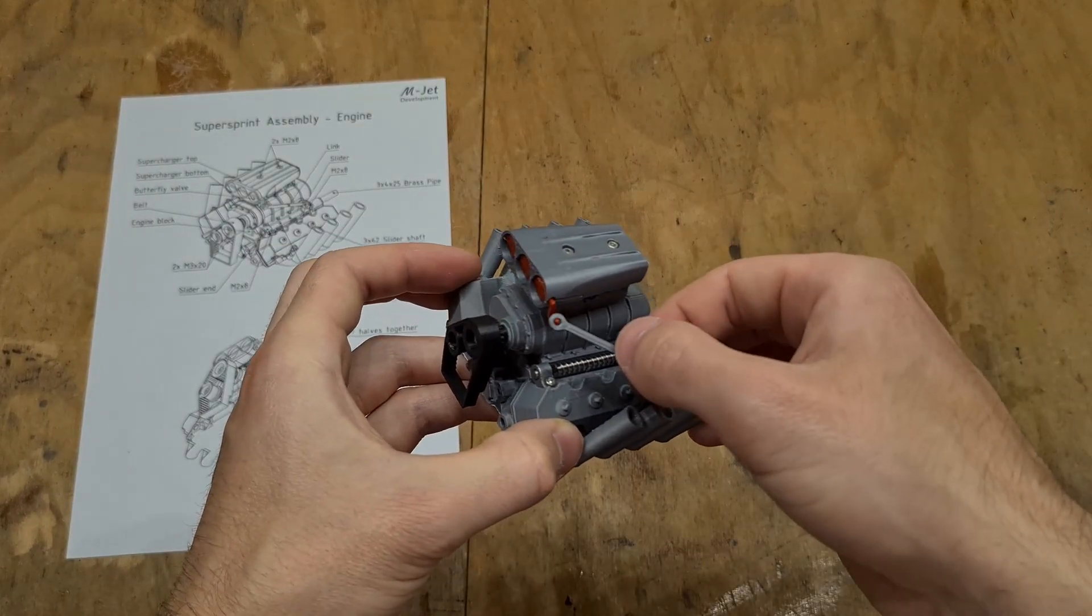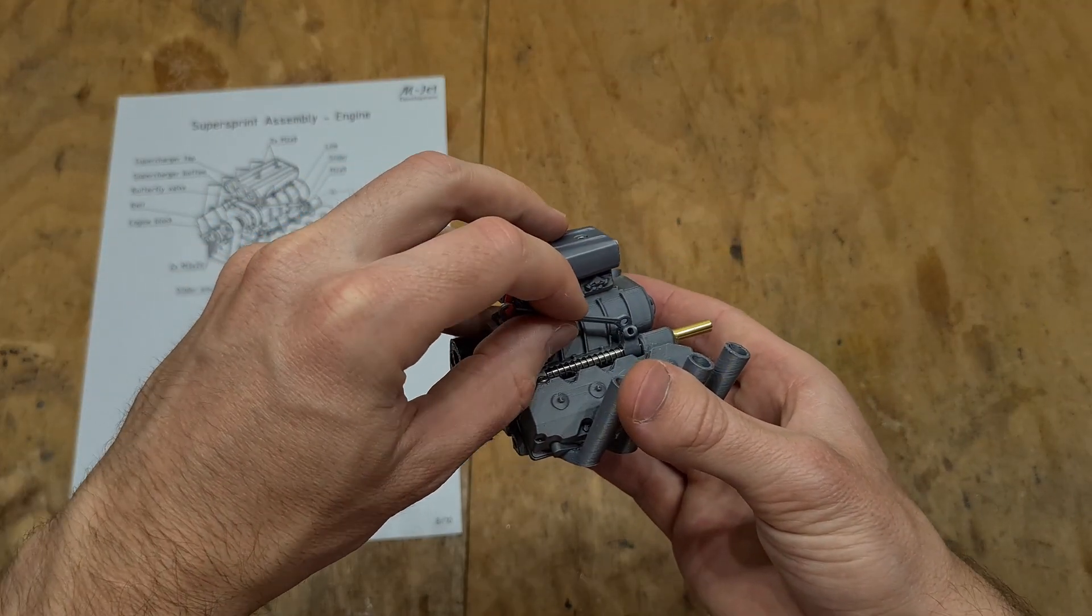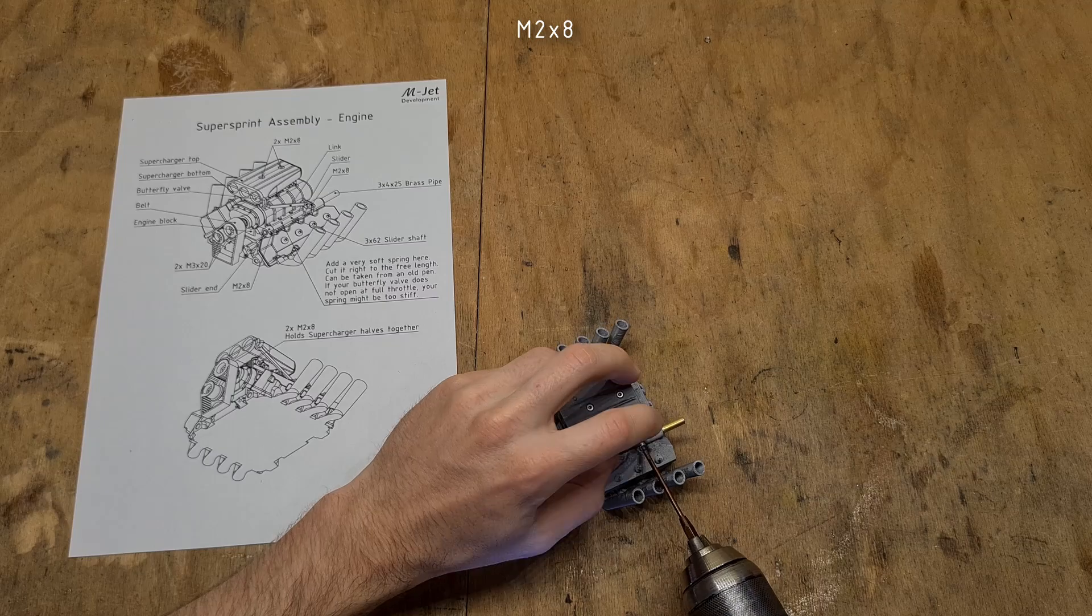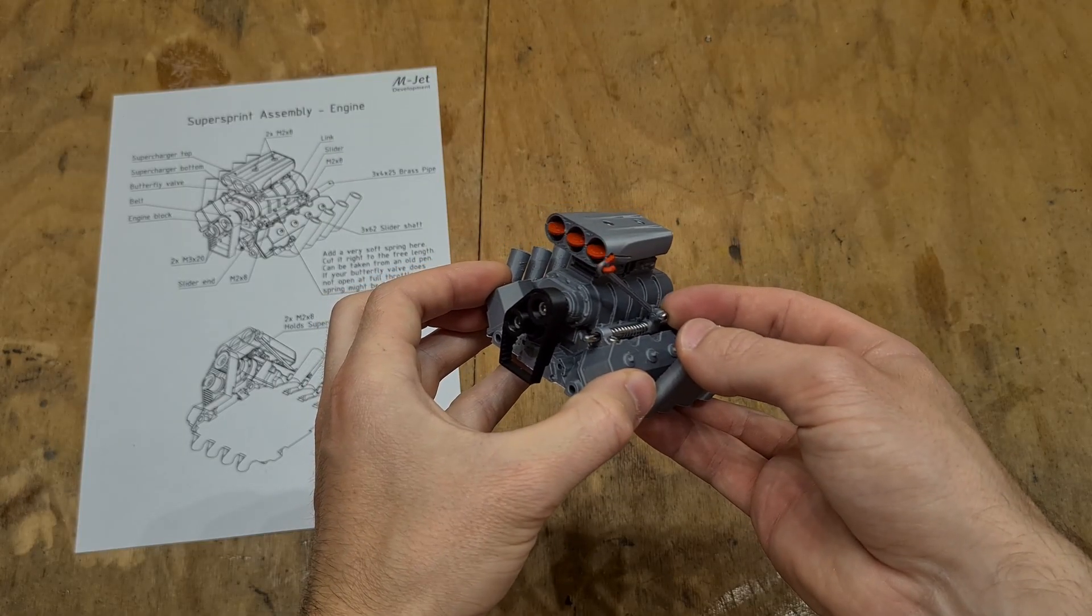The engine assembly gets finished by connecting the supercharger link to the butterfly valve and using an M2x8 to connect it to the slider. This is how the final movement should look like.